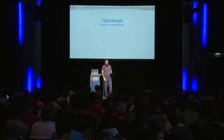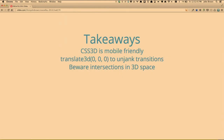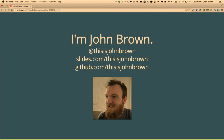I'm nearing the end of my talk. Here are the four takeaways: CSS3D is mobile friendly — you should be using it, it is awesome. Use translate3D to un-jank your transitions in 2D if you're having issues. Beware intersections in 3D space — at this point, plan on things not intersecting correctly in most browsers. And watch your users and learn from them from the very beginning — make sure you're creating something everybody can enjoy. Thank you all for listening, and thank you on YouTube for making it all the way through. I'm John Brown at thisisjohnbrown. These slides will be up at slides.com/thisisjohnbrown. I'm un-Googleable, but if you search for thisisjohnbrown, that's how you can find me. Let's go have lunch, everybody.